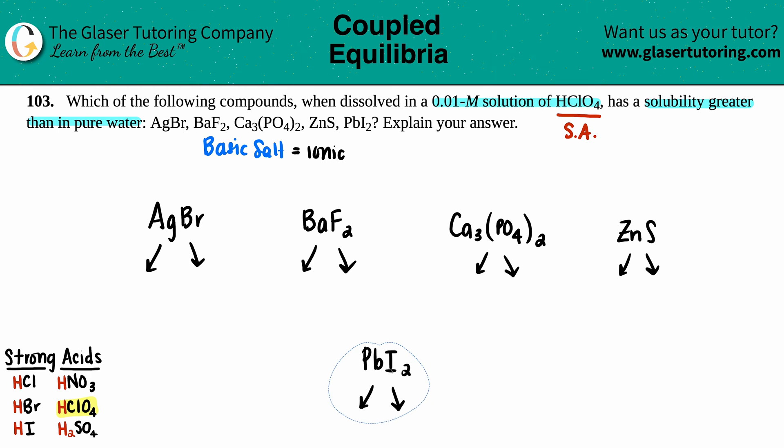Now remember, the cation—the positive—is always the metal in the front, or polyatomic, but not in this case. We have Ag (that's silver), we got barium, we got calcium, we have zinc, and we have lead.